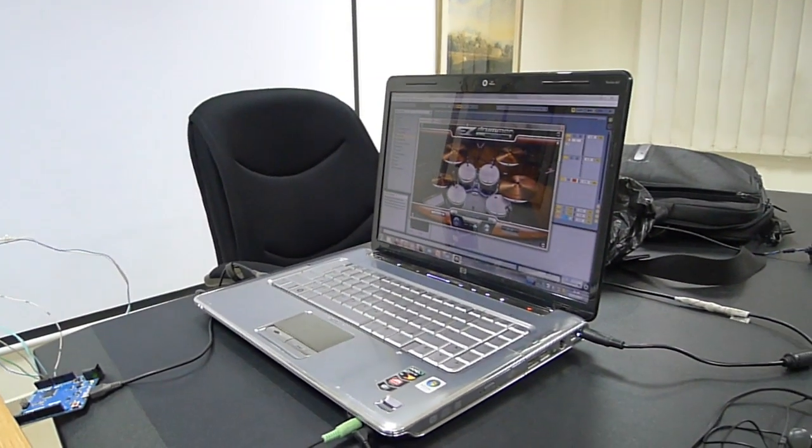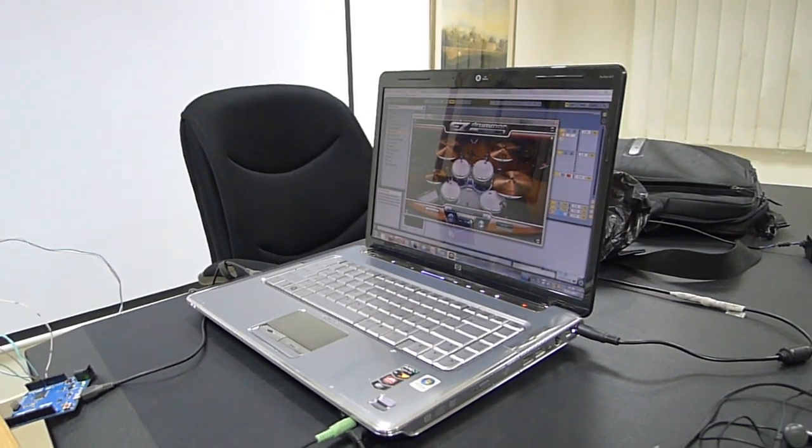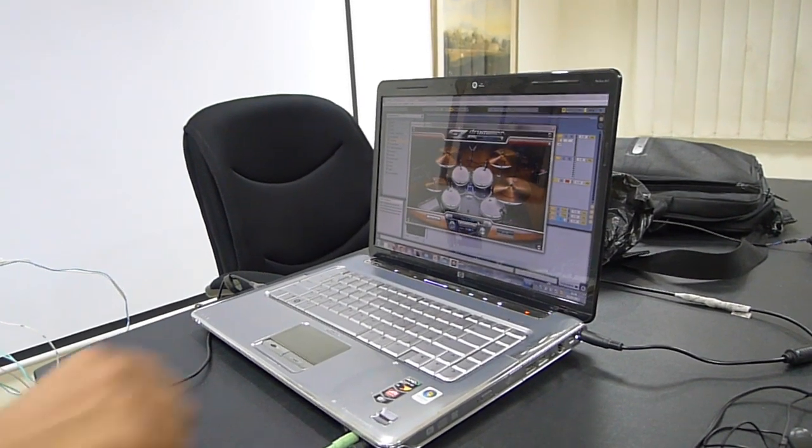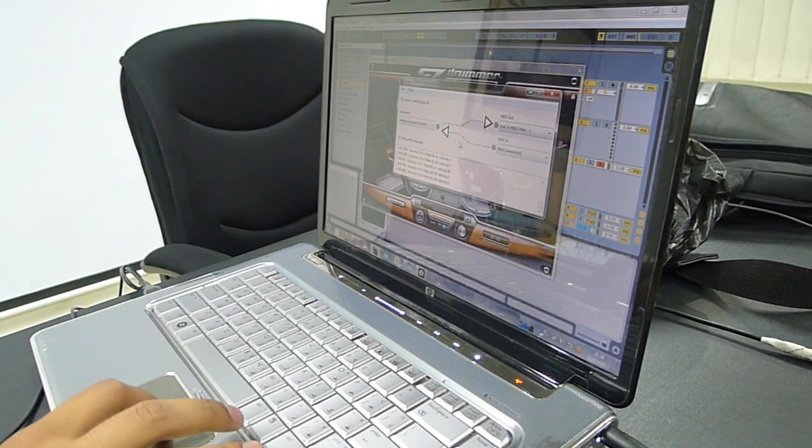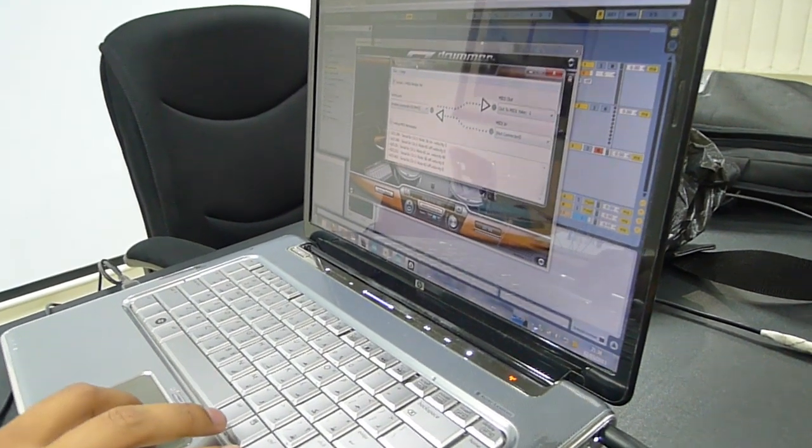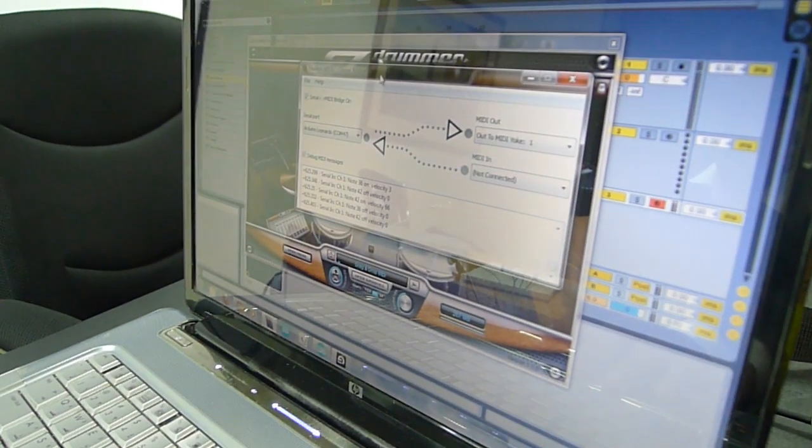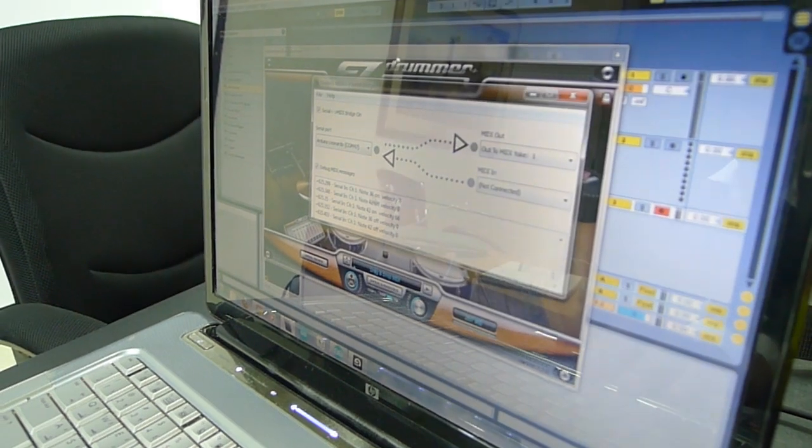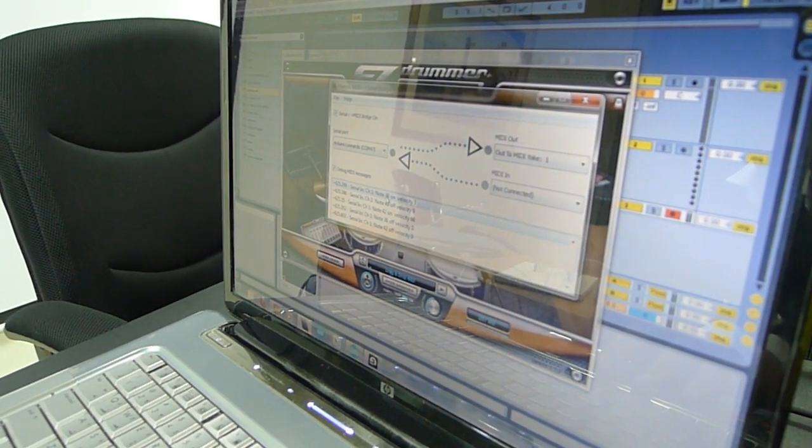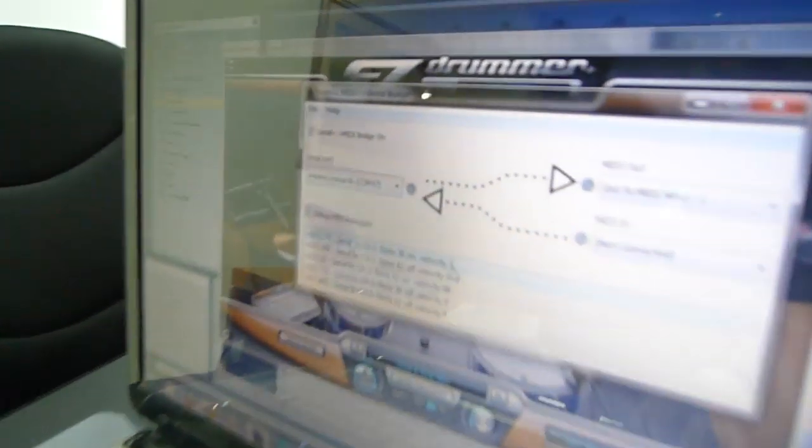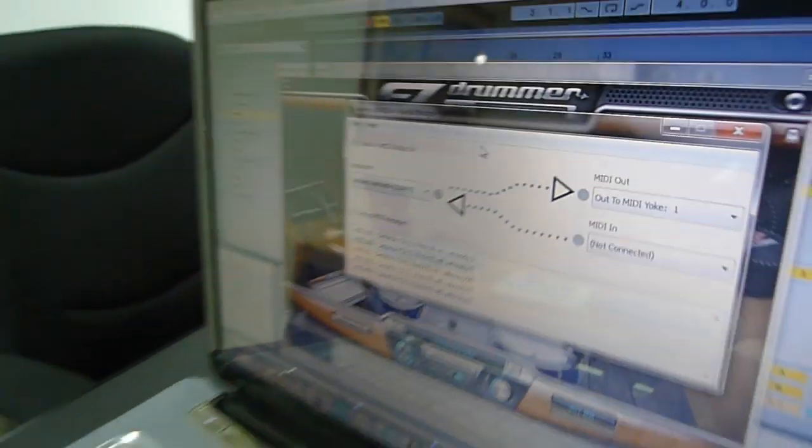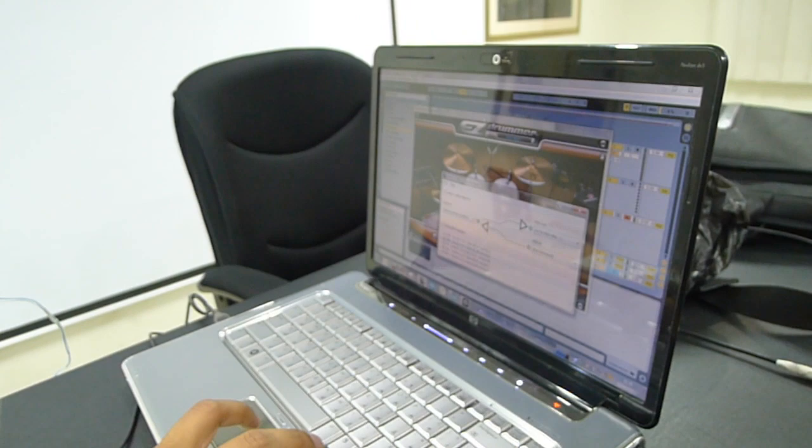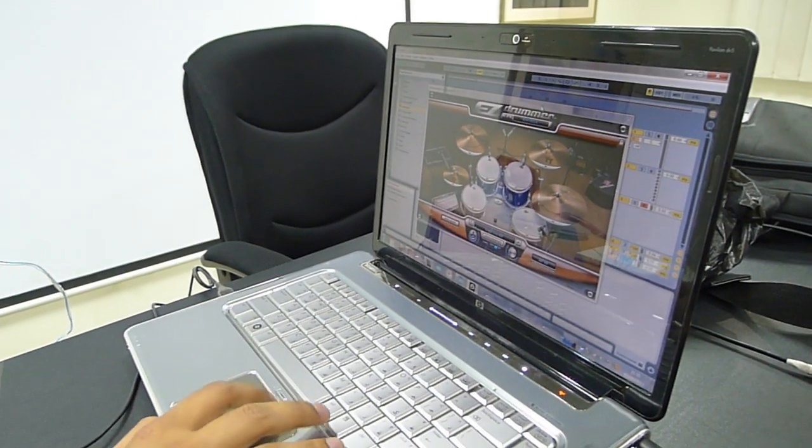And can you tell us more about the software side of things? Well, over here, first, our input goes through a serial port to this hairless MIDI serial bridge, which takes each note. Over here, you can see this note number 36 with velocity 3 being struck. And over here, it's been turned off. So, this basically generates the notes here.